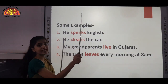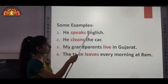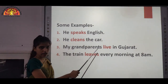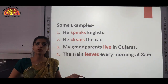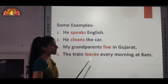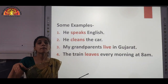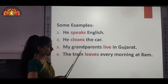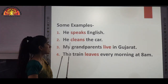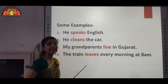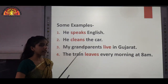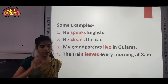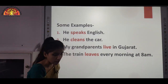Some examples of simple present tense: 'He speaks English' — showing a habitual action. 'He cleans the car' — using the base form. 'My grandparents live in Kuchh Ra' — indicating an indefinite period of time. 'The train leaves every morning at 8 am' — showing a permanent situation. We use the base form of the verb for simple present tense.